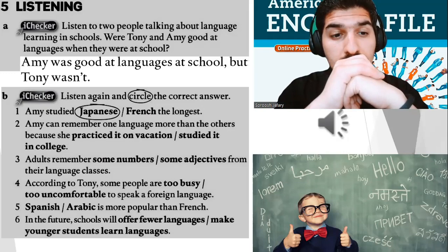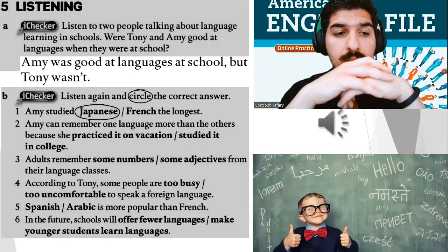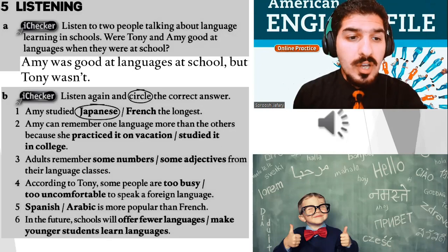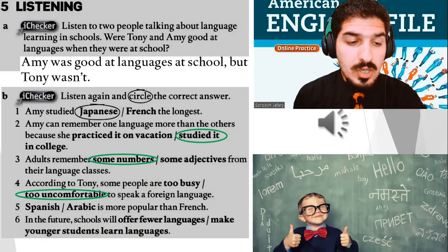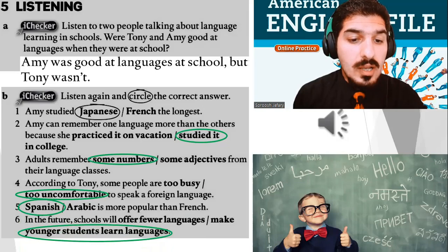Alright, check your answers with your friends. Let's start from number two. Amy can remember one language more than the others because she studied it in college. Number three: adults remember some numbers from their language classes. Number four: according to Tony, some people are too uncomfortable to speak a foreign language. Number five: Spanish is more popular than French. And the last one: in the future, schools will make younger students learn languages.